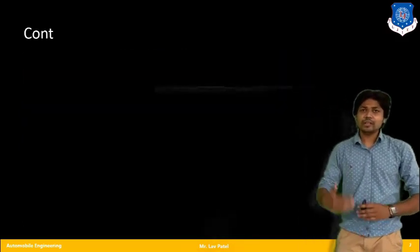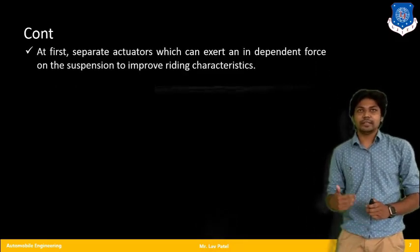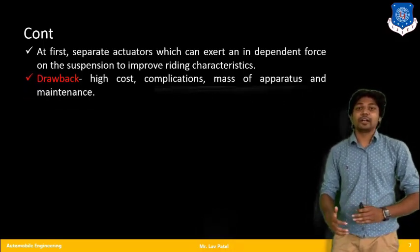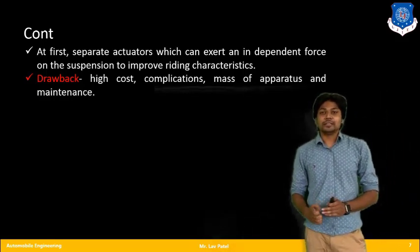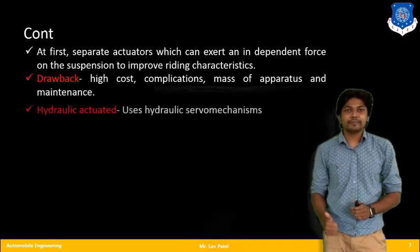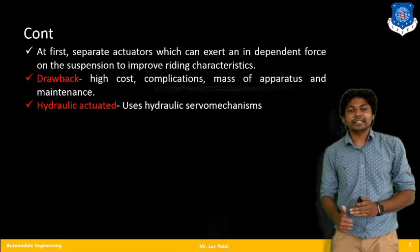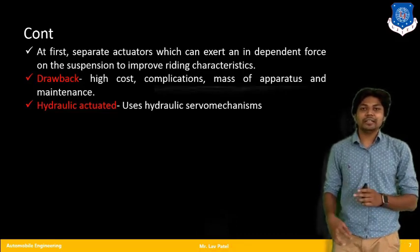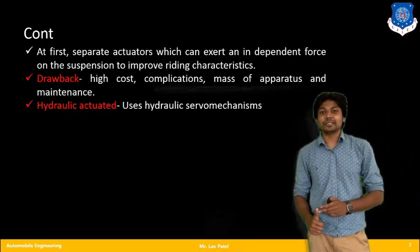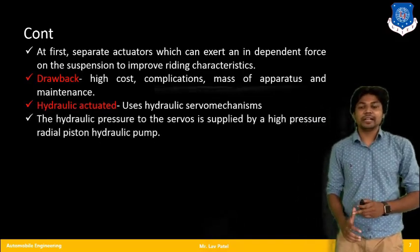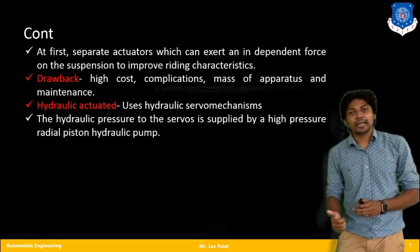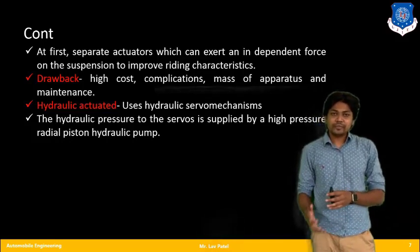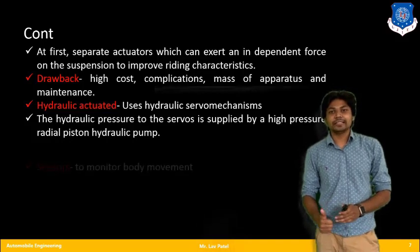Let us talk about the drawbacks of the active suspension system. We have already talked about different components. According to that, we find high cost, the mass of the apparatus is increasing, and maintenance is very high. Regarding actuators, we need several actuating systems like hydraulic systems that have been used. That hydraulic system incorporated in the vehicle is again a difficult task, as we have to maintain high pressure to actuate that system.